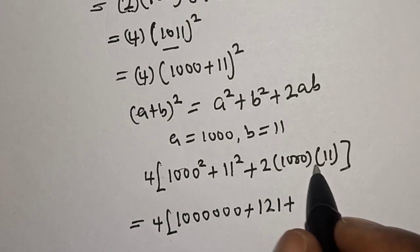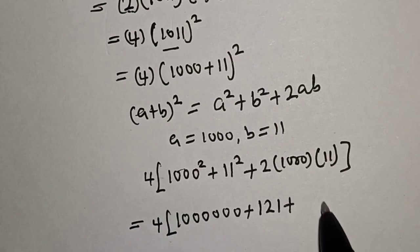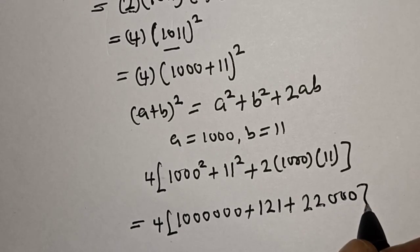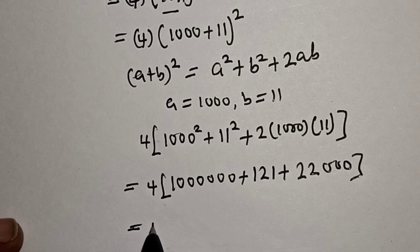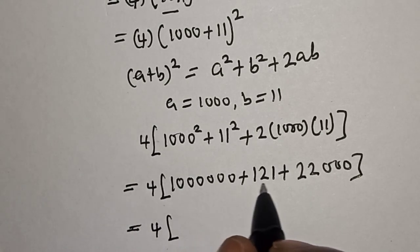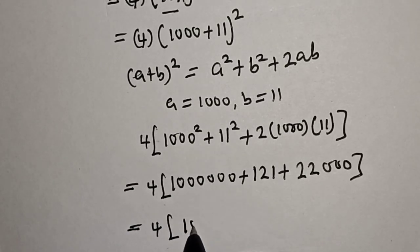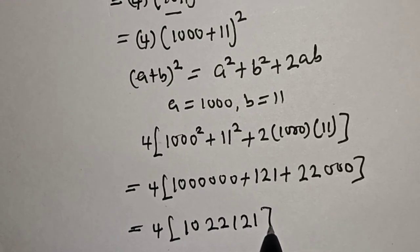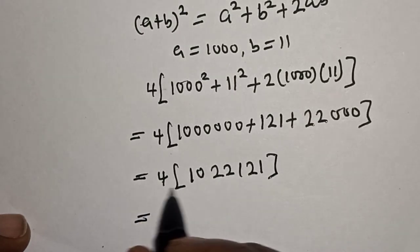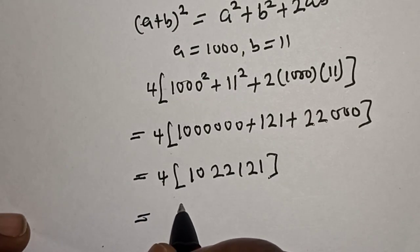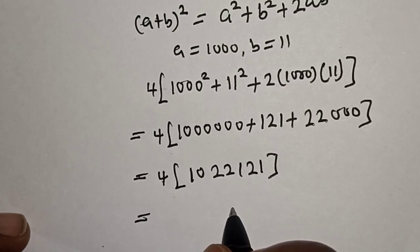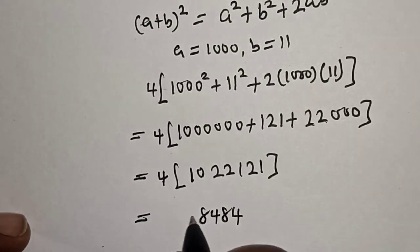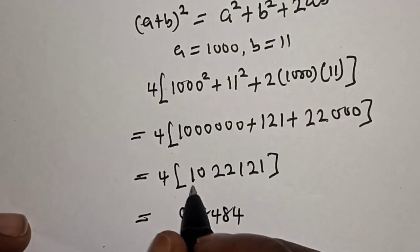Adding everything together inside the brackets: 1,000,000 plus 121 plus 22,000 equals 1,022,121. Now multiply by 4: 4 times 1 is 4, 4 times 2 is 8, 4 times 1 is 4, 4 times 2 is 8, 4 times 2 is 8, 4 times 0 is 0, 4 times 1 is 4.